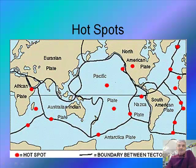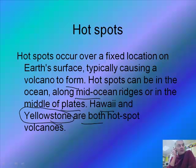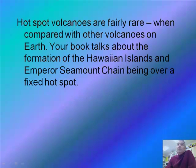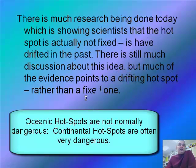Let's talk about a hot spot. A hot spot occurs over a fixed location on the Earth's surface, typically causing a volcano to form. They can be in the ocean, along mid-ocean ridges, or in the middle of plates. Hawaii and Yellowstone are both hot spots. In Yellowstone, the crust is thin and hot magma from under the Earth comes to the surface. Your book talks about the formation of the Hawaiian Islands and the Emperor Seamount chain being over fixed hot spots.